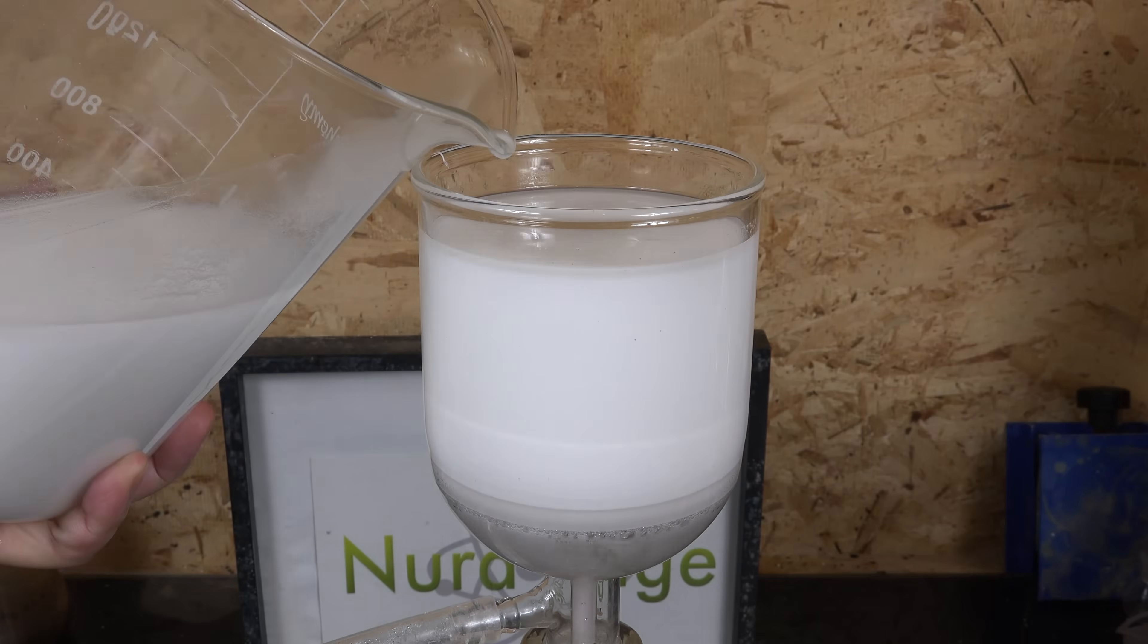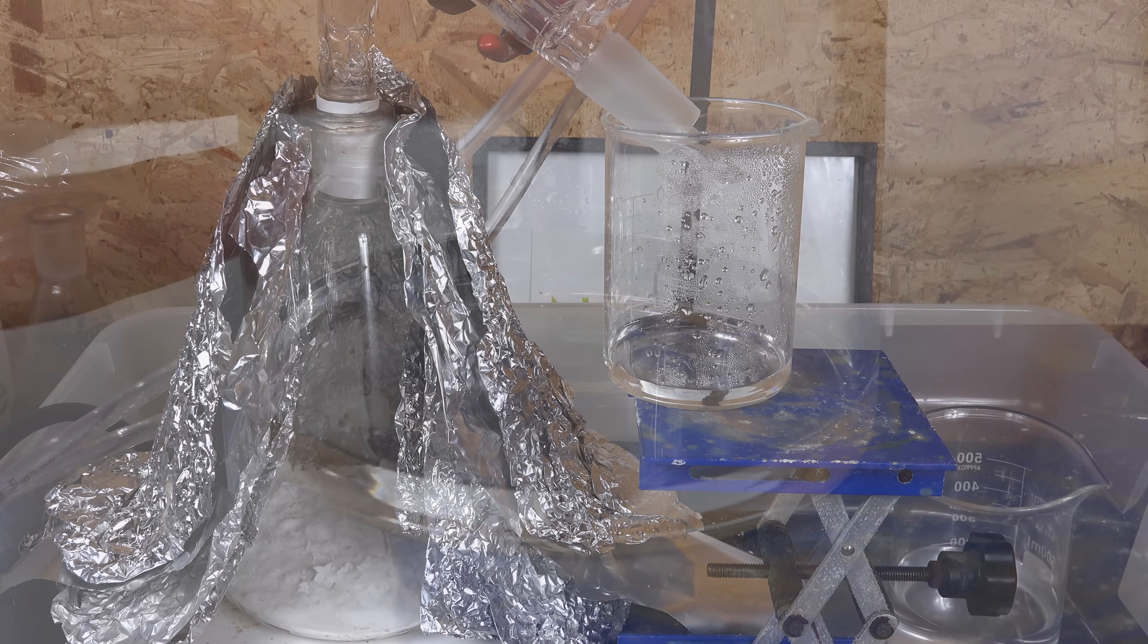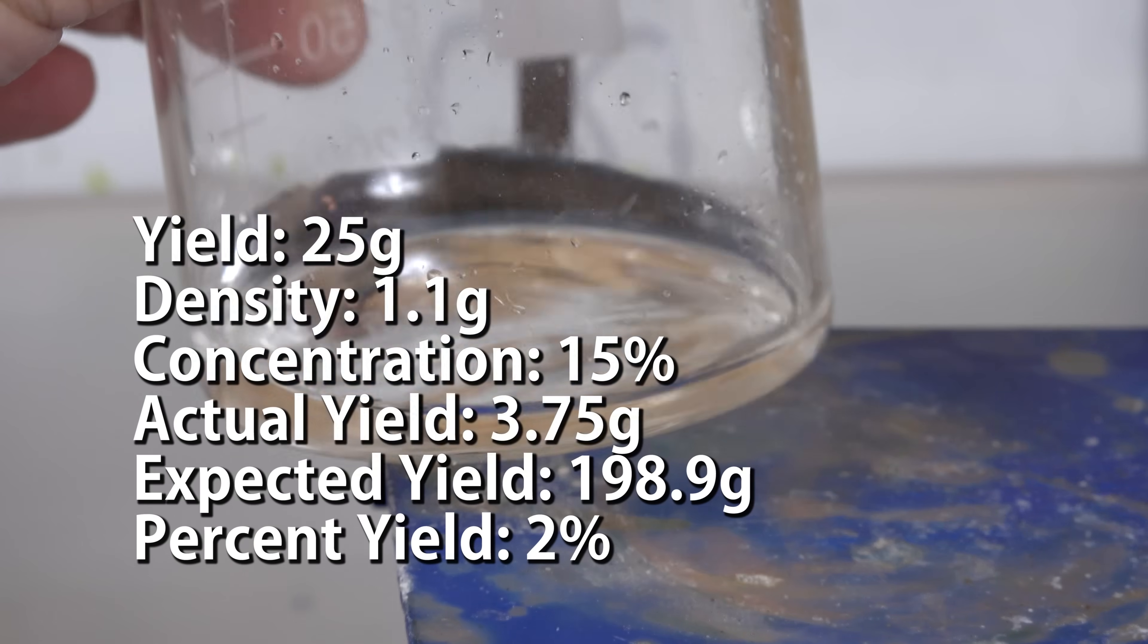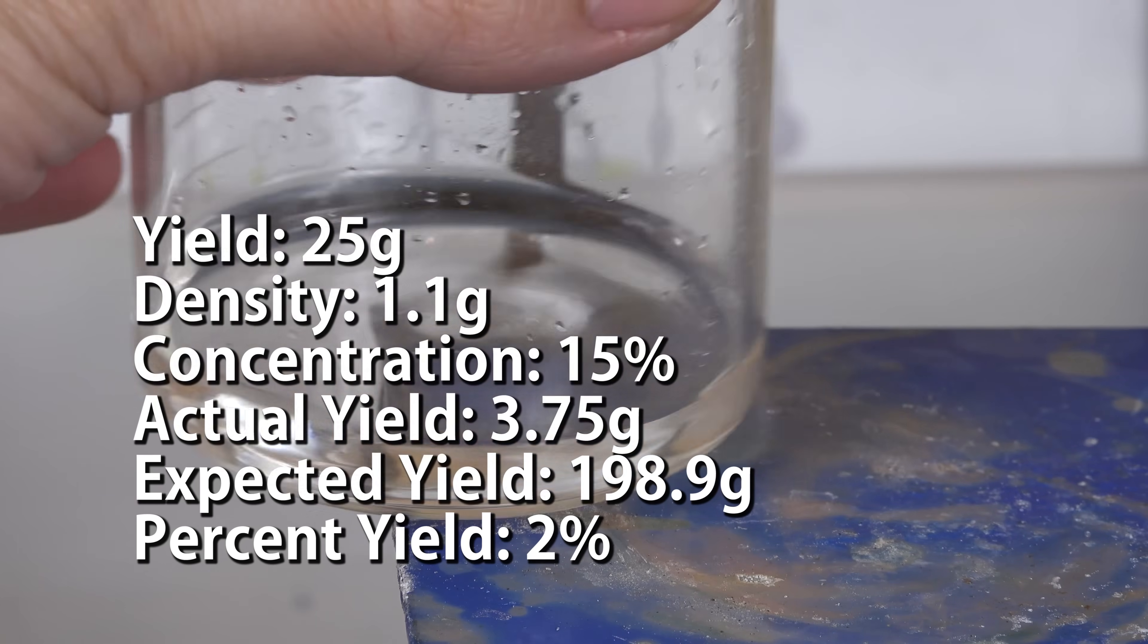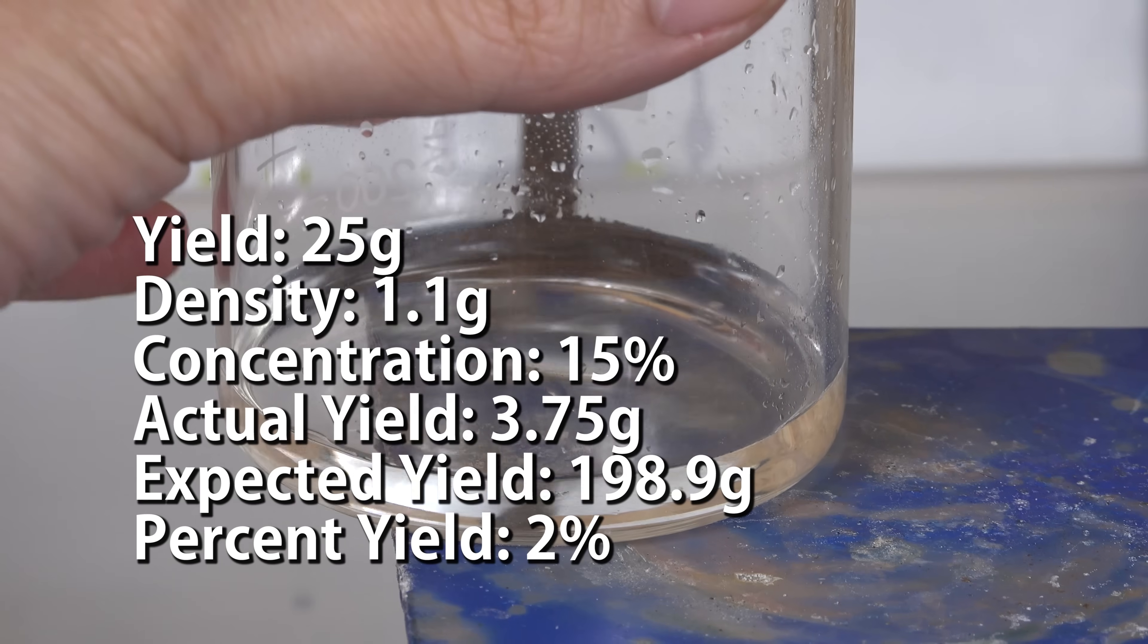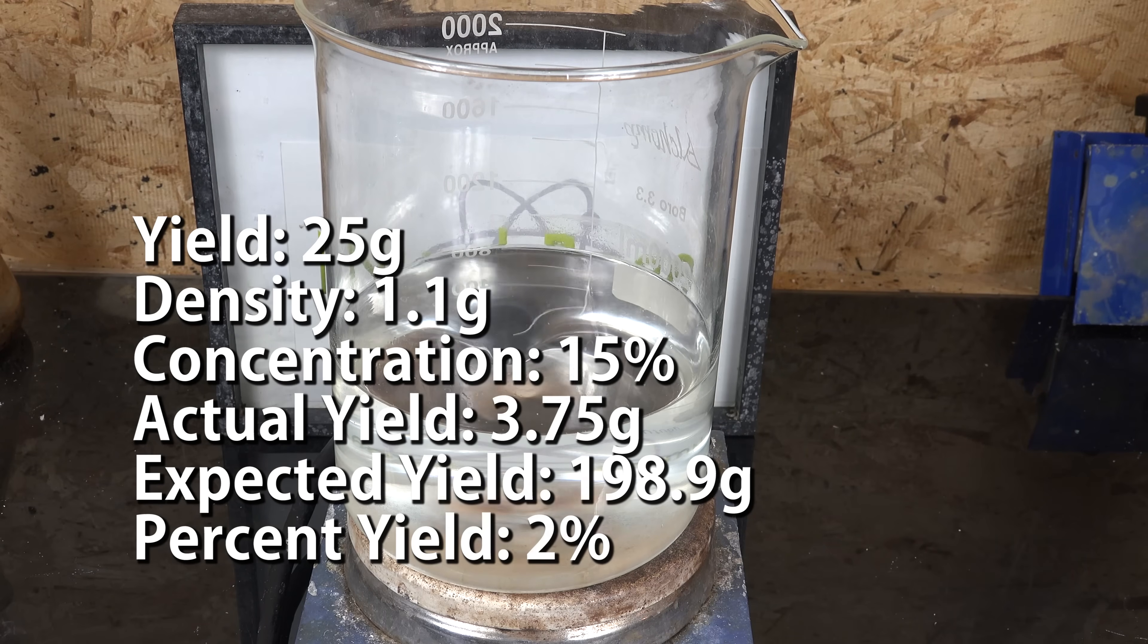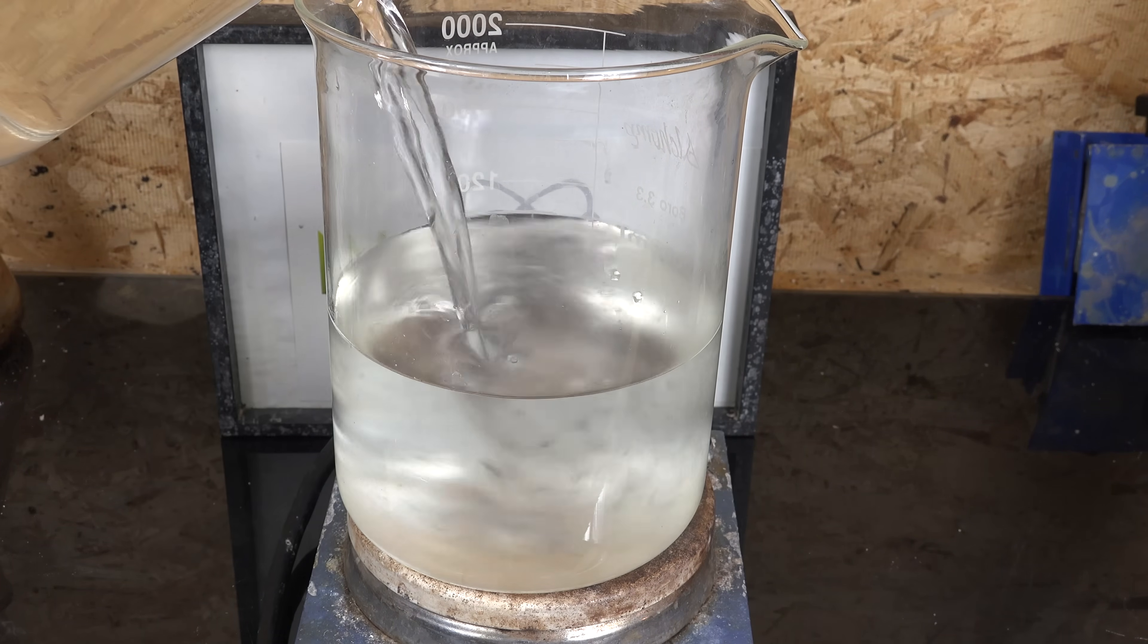After boiling them and mixing them together I got a precipitate and I thought it was working. So I filtered them, boiled them down and then proceeded to distill the acid. The final amount I obtained was 25g at a density of 1.1g for a concentration of about 15% or about 3.75g of actual yield.